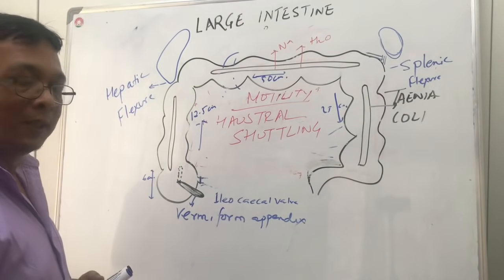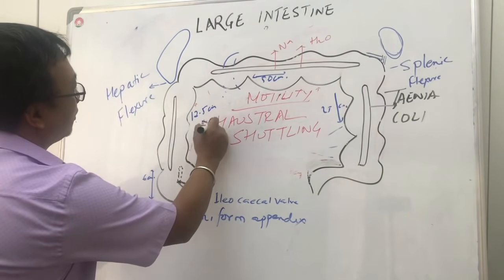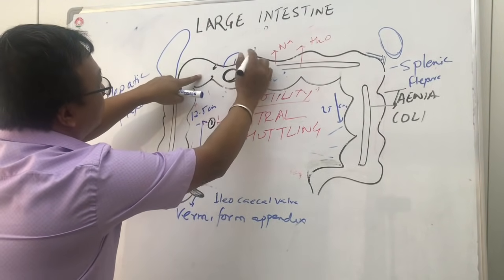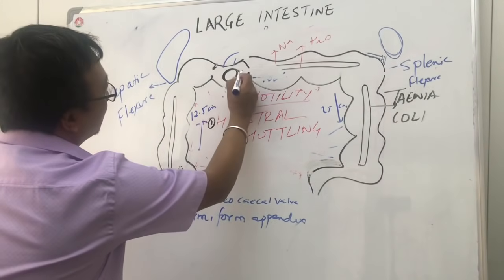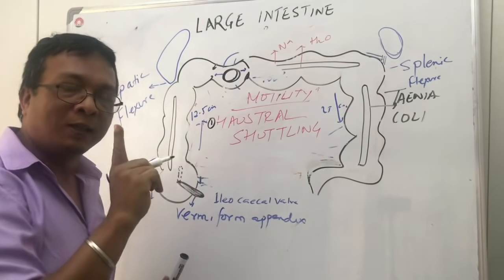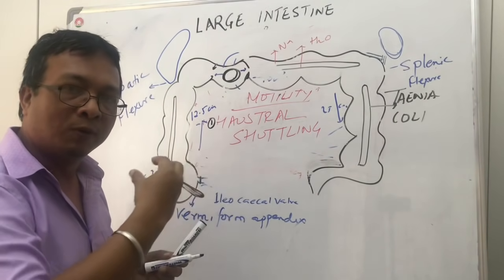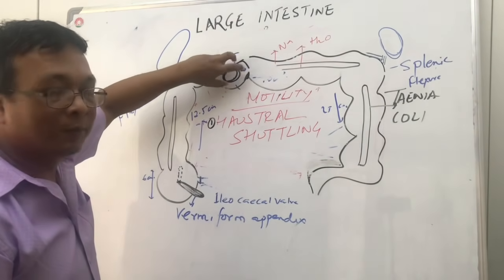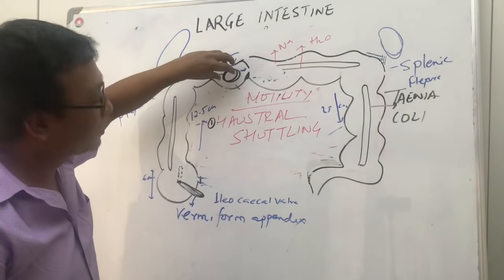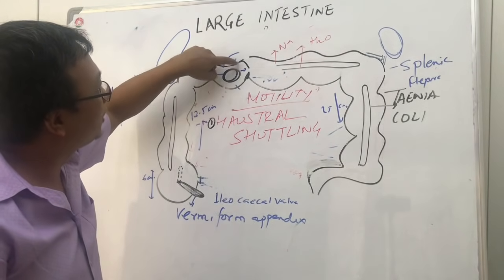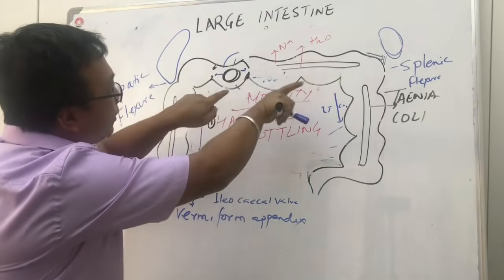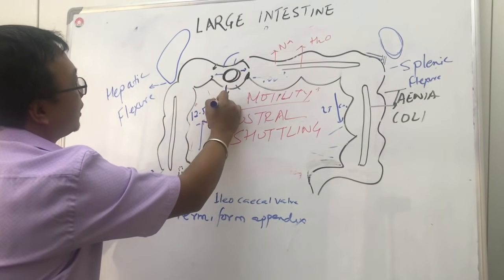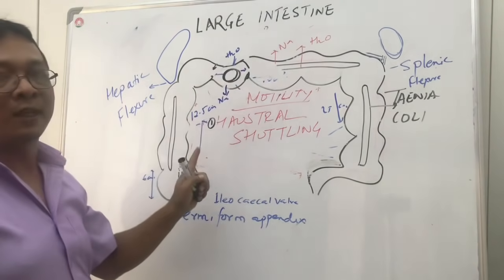Regarding haustral shuttling: when food is present in the large intestine, there is contraction on both sides of the haustra, causing the food bolus to move to and fro — forward and backward. This is called haustral shuttling. During this process, mixing of contents occurs and it gives time so that sodium and water can be reabsorbed more and more.